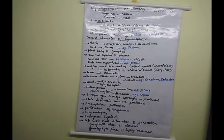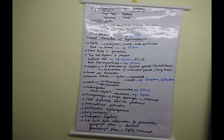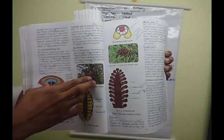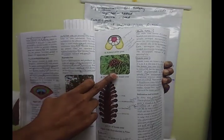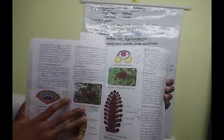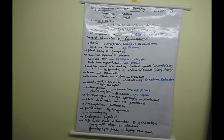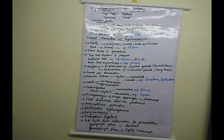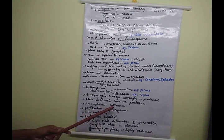An important characteristic feature is that gymnosperms produce male and female cones — special seed-like structures. Looking at the diagram, you can see the male cone and female cone in Pinus. The type of pollination in gymnosperms is anemophilous — that is, wind pollination takes place in most cases.